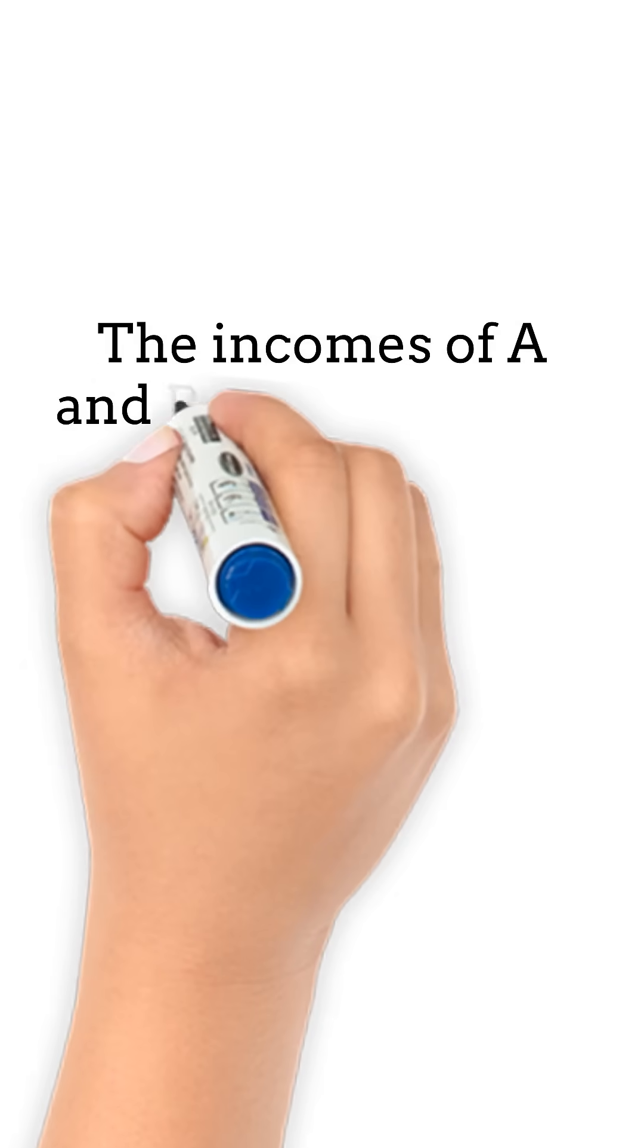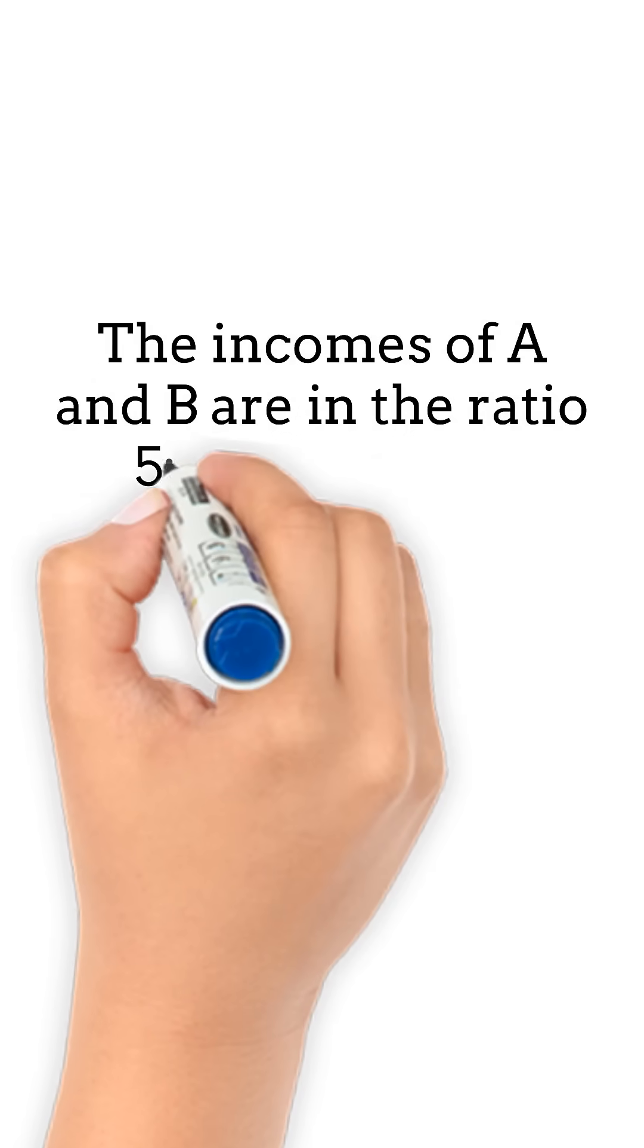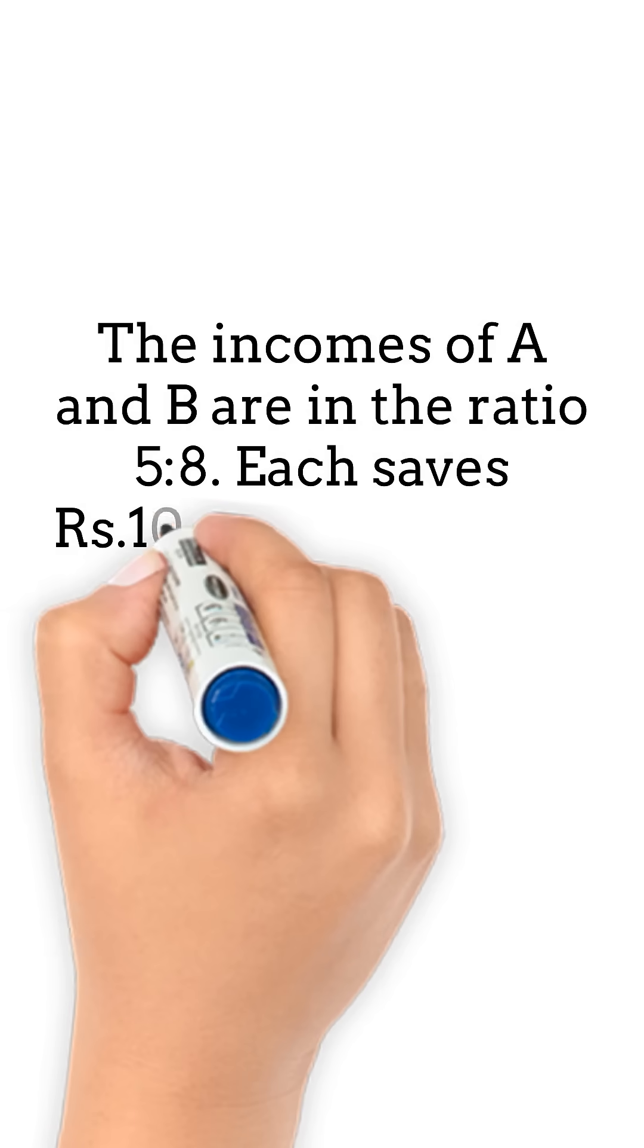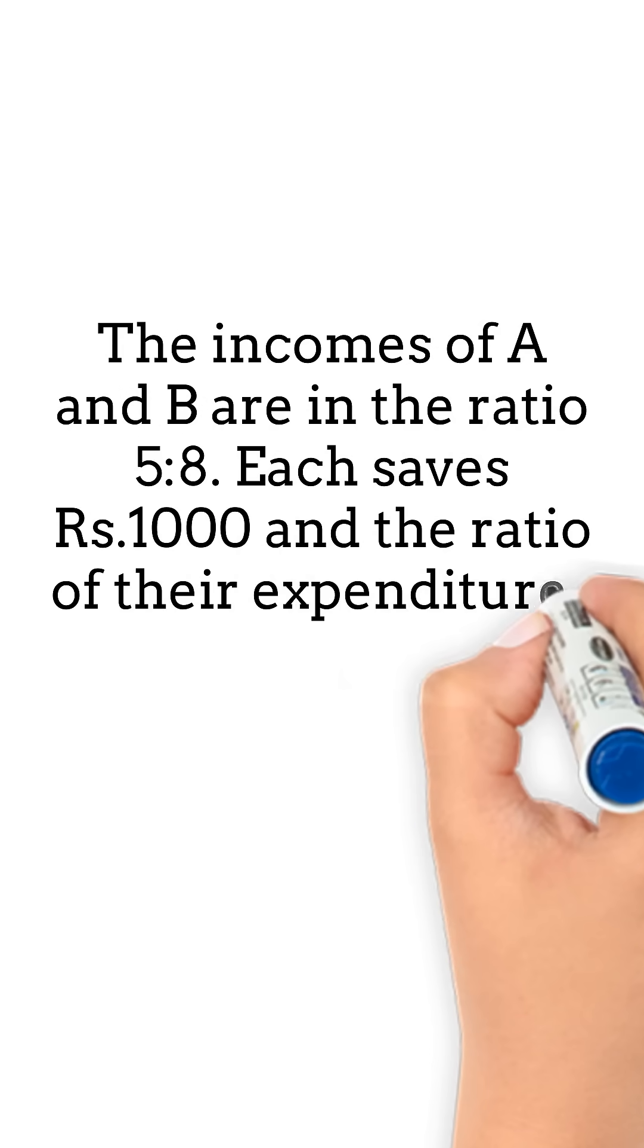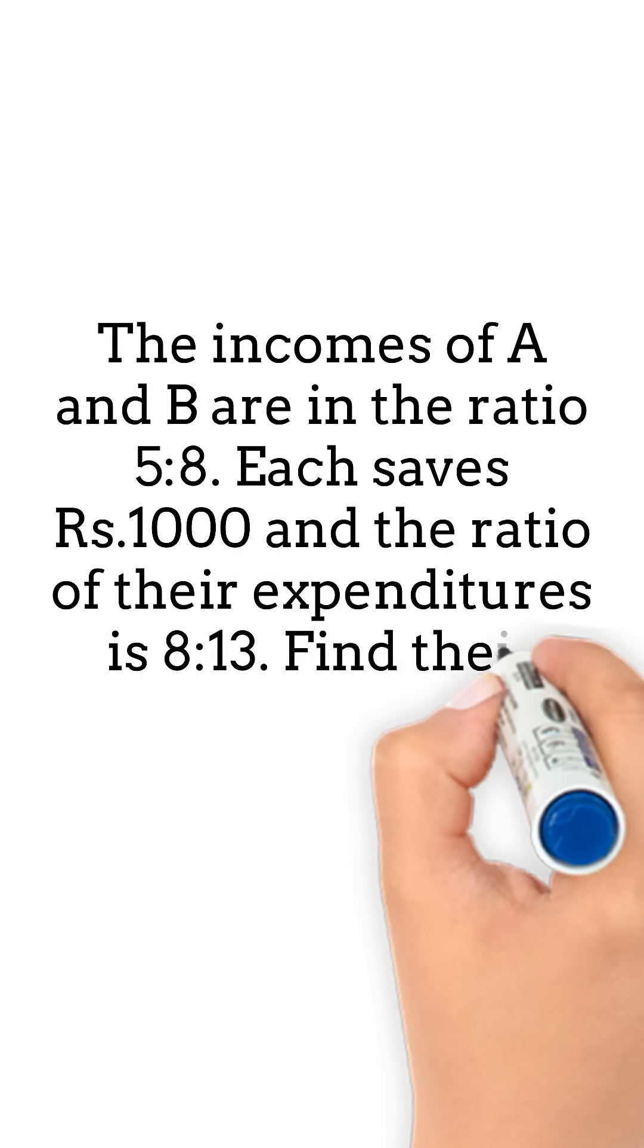The incomes of A and B are in the ratio 5 to 8. Each saves 1,000 rupees and the ratio of their expenditures is 8 to 13. Find their incomes.